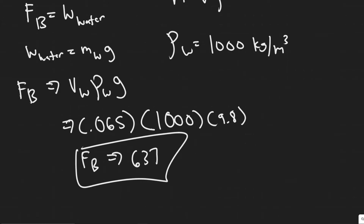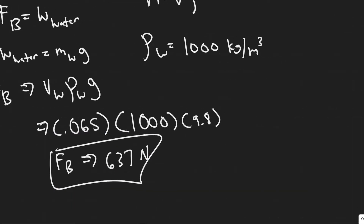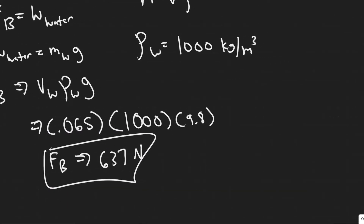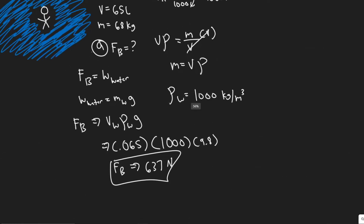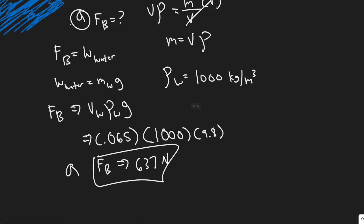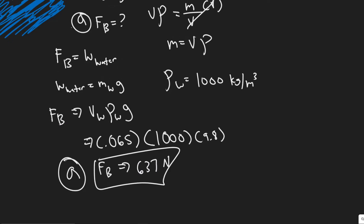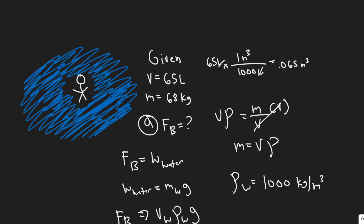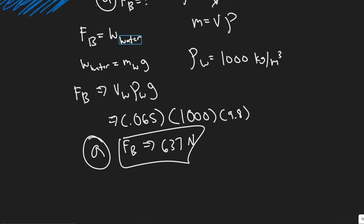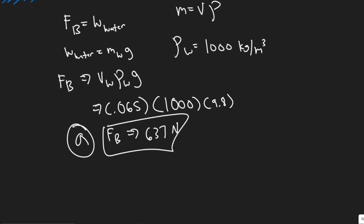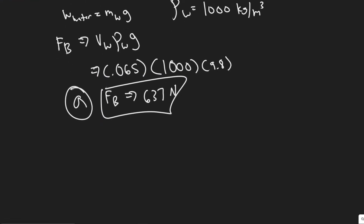Keep in mind, if you use a more exact value for the density of water you'll get a slightly different answer, but using 1000 here gives 637 newtons — that's your answer to Part A. So the buoyant force acting on the diver was equal to the weight of water displaced. We replaced the mass of the water using m = V × ρ, plugged in the values, and now we know what the buoyant force is.